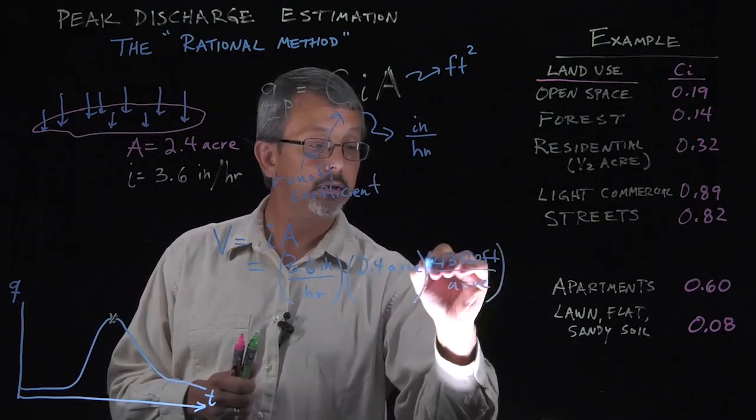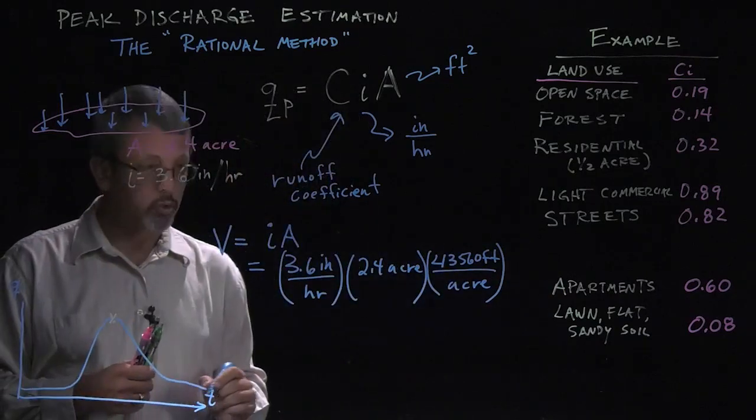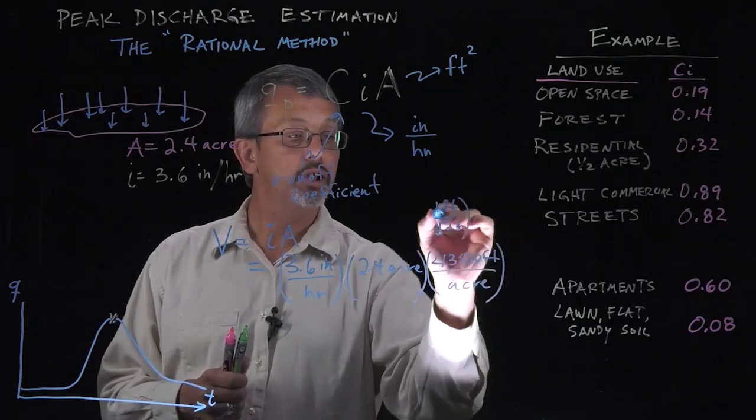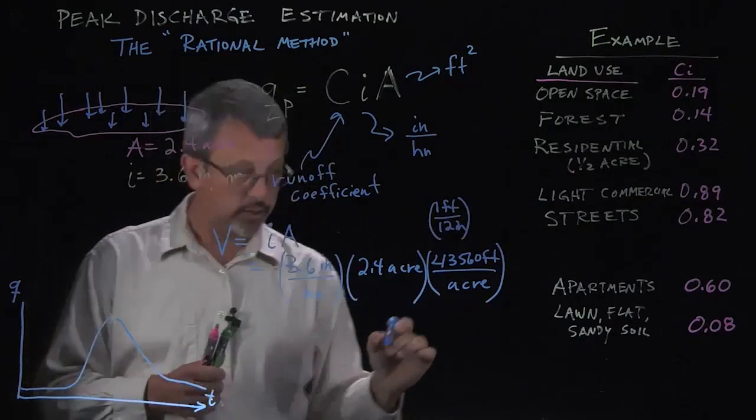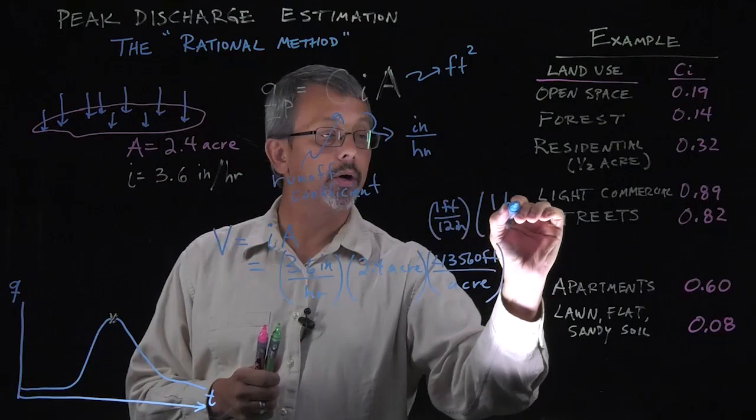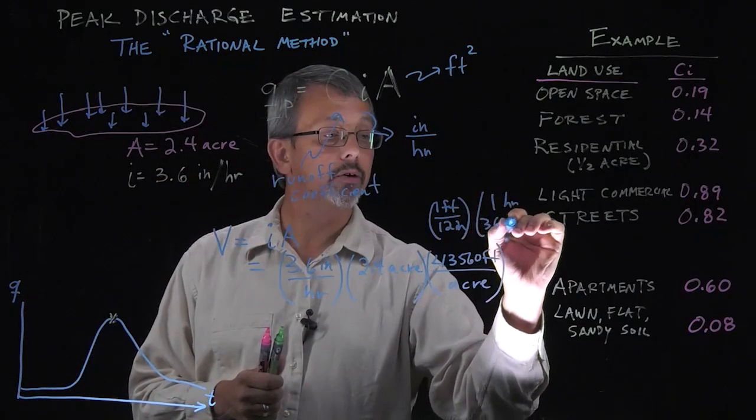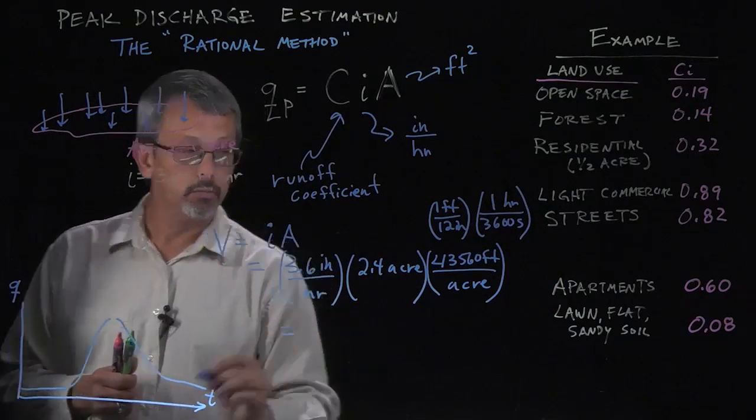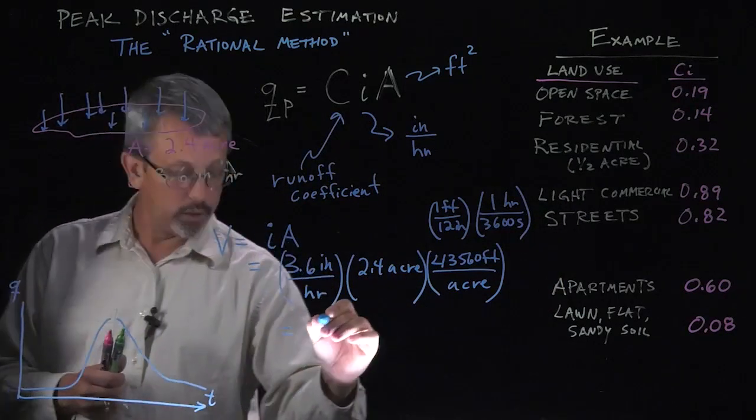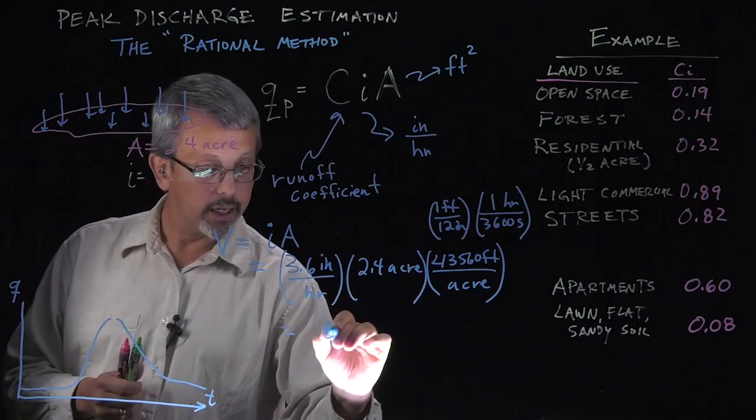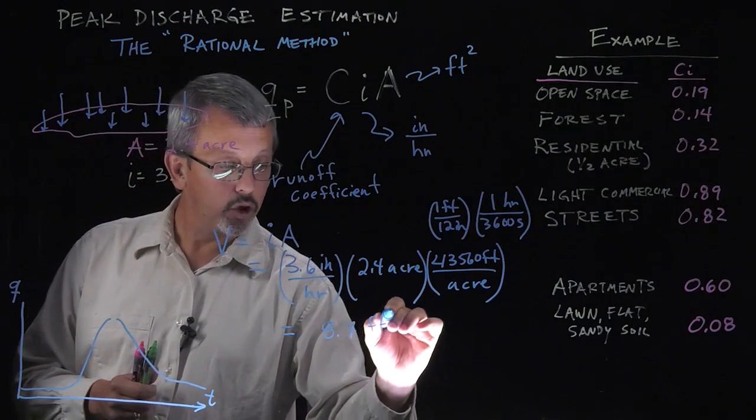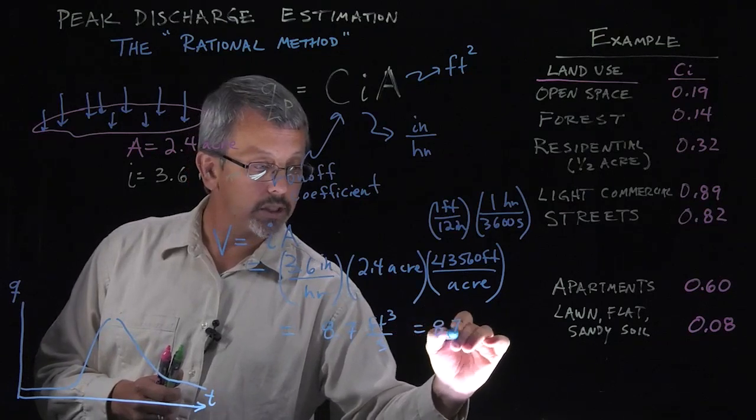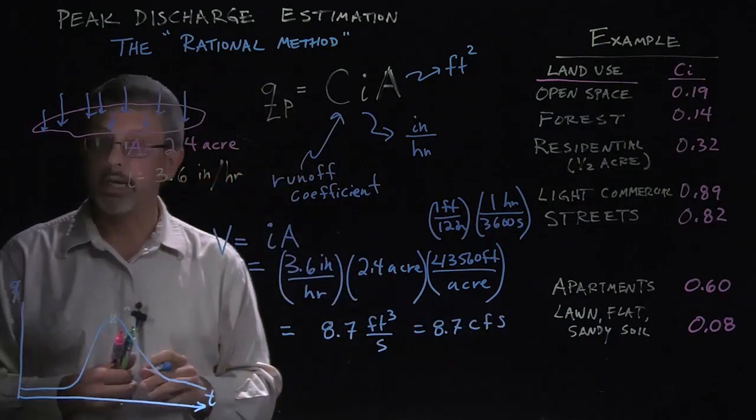That's 43,560 feet in an acre, as well as conversions for one foot is 12 inches and one hour being 3,600 seconds if we actually want to do this. And if we do that calculation, we multiply all those numbers out. We might get something like 8.7 cubic feet per second or 8.7 CFS, cubic feet per second.